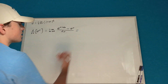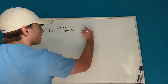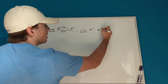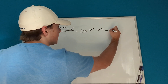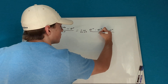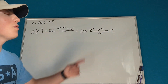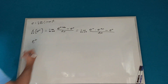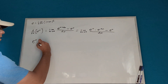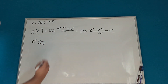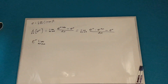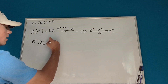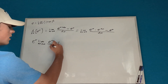So then we can say this is equal to the limit as delta x approaches 0 of e to the x times e to the delta x, minus e to the x, over delta x — using exponent properties. Now we can factor out an e to the x and take it completely out of the limit. So we get e to the x times the limit as delta x approaches 0 of e to the delta x minus 1, over delta x.